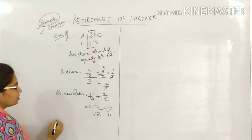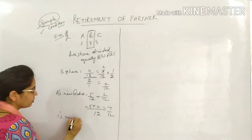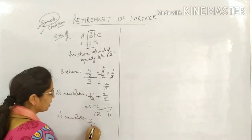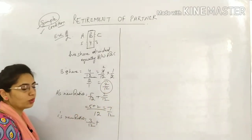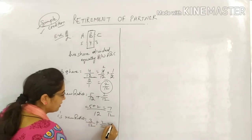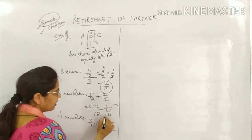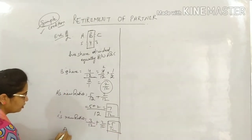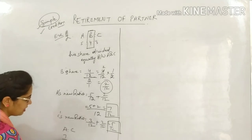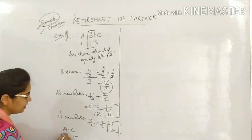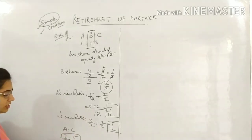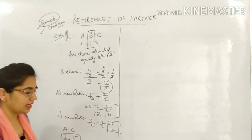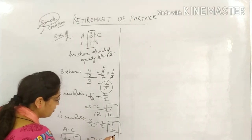B has already left. Now for C's new ratio: C previously had 3/12, plus 2/12 received from B's share. Adding gives 5/12. So the new ratio between A and C is 7/12 : 5/12, which simplifies to 7:5. That is the answer.